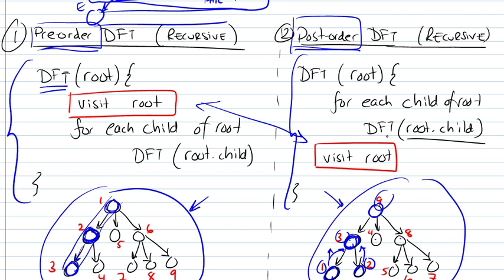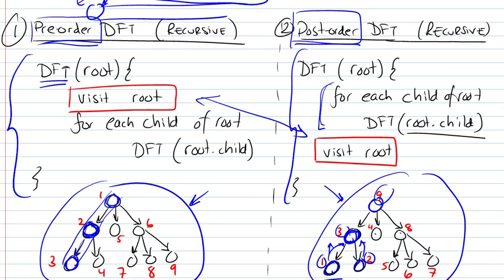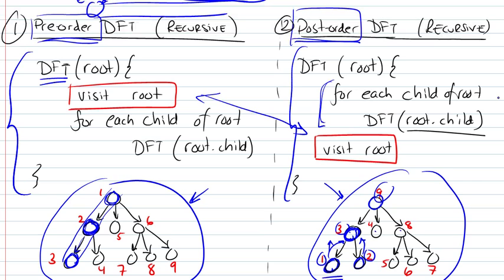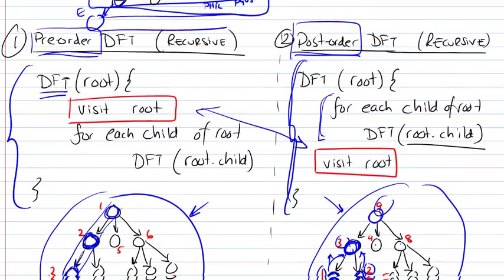But in this case, what we're going to do is we're going to be calling the same function on the children until we reach a node which has no children, which by definition is a leaf node, and then we visit that node, and then we start moving backwards. So in this case, we start with the children before going upwards. So this is basically the recursive implementation of the DFT.